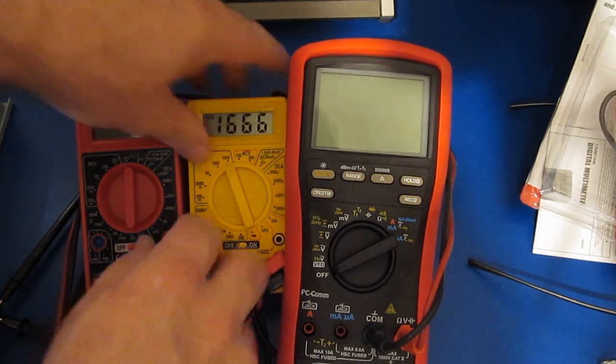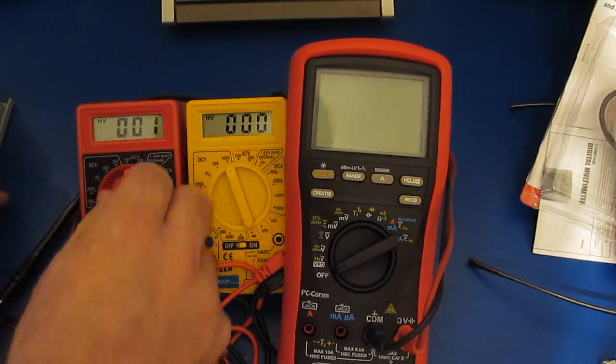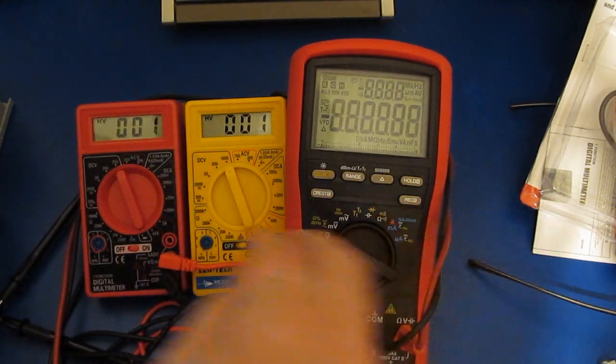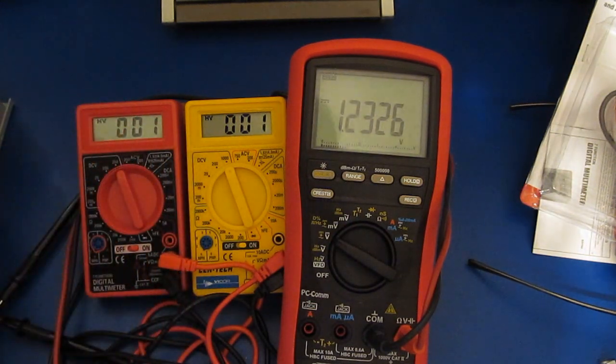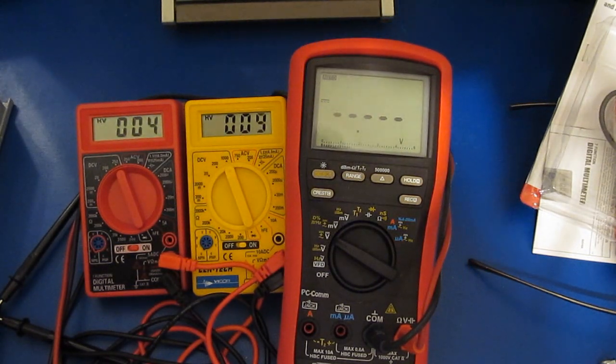So what we're going to do is just turn these all on and we'll set them to their maximum range. Now, I don't know if this particular meter, if they change the firmware, I kind of doubt it. So hopefully this meter will still read up to a thousand volts. So let's just go ahead and we'll turn on our power supply.